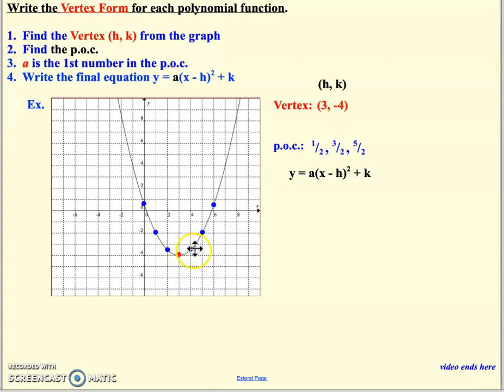So over 1, up a half. Over 1, up 3 halves (1.5). Over 1, up 5 halves (2.5). It's at 1, half, 3 halves, 5 halves. Now, the key isn't so much the second two here, it's the first one. I've got to know what my a value is, and a is always the first number in the pattern of change.